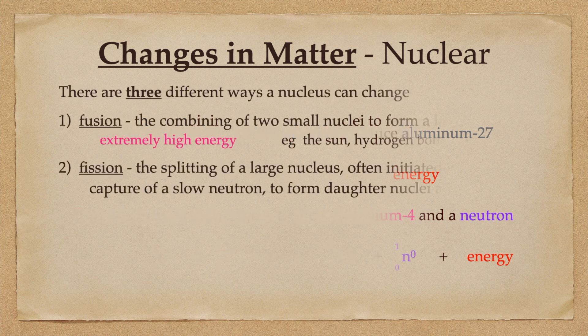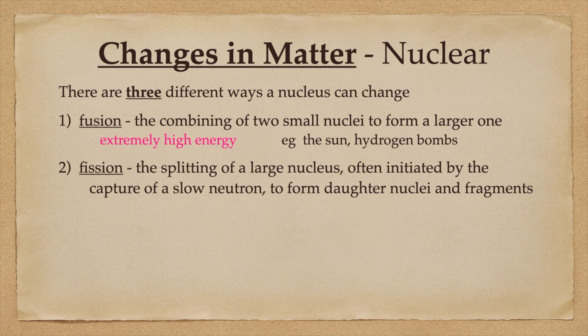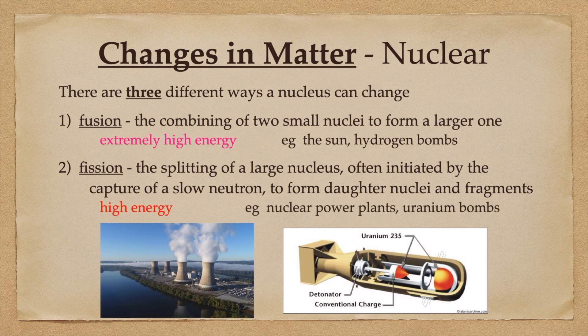The second way a nucleus can change is by fission, that is the splitting of a large nucleus into smaller fragments. This is often initiated by the capture of a slow neutron and forms at least two but sometimes several daughter nuclei and other fragments. This is pretty high energy and it's the energy we use to power our nuclear power plants and the uranium powered bombs.